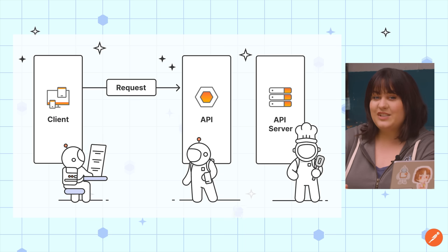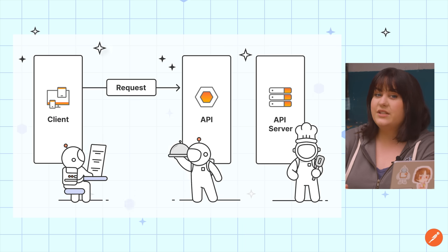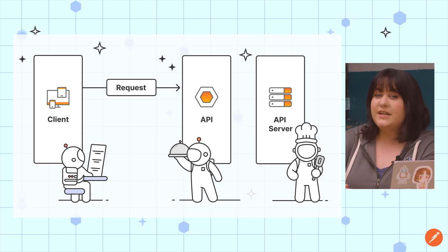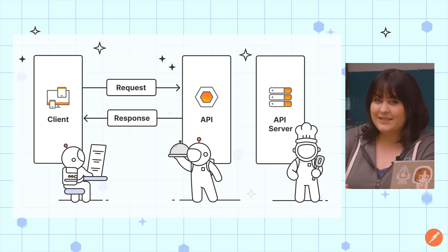The kitchen makes the customer's food according to their instructions and then hands it off to the waiter, who delivers it back to the customer. When the waiter brings the customer their order, what they are delivering is the API response.